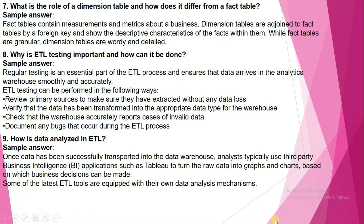Next question: what is the role of a dimension table and how does it differ from a fact table? Fact tables contain measurements and metrics about the business. Dimension tables are joined to fact tables by a foreign key and show descriptive characteristics of facts. While fact tables are granular, dimension tables are wordy and detailed.